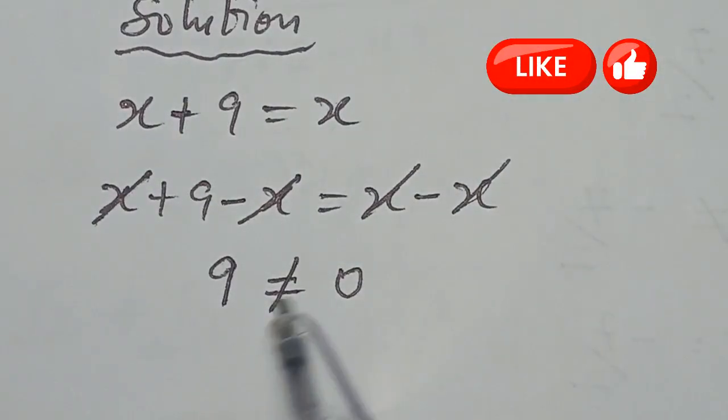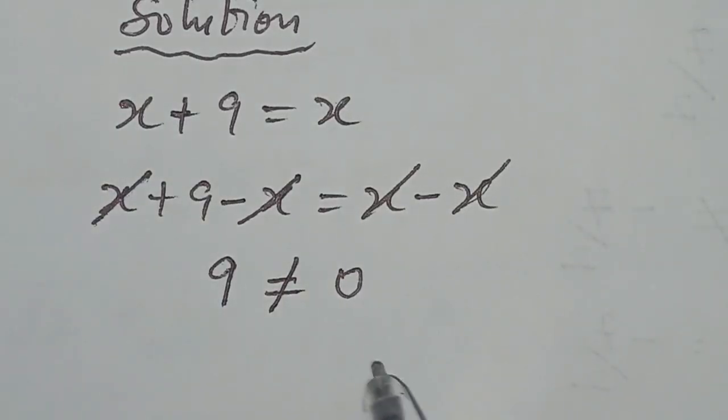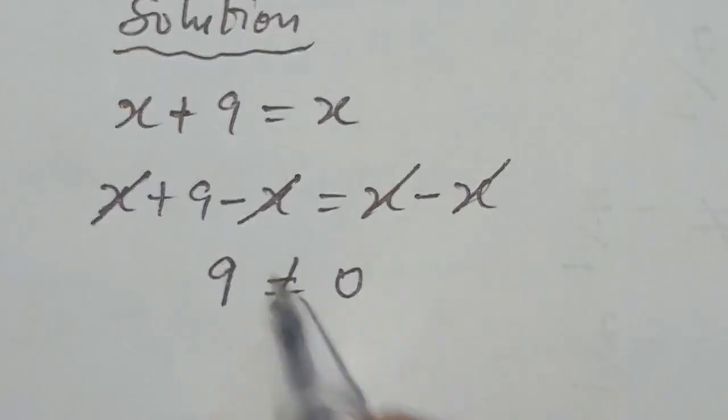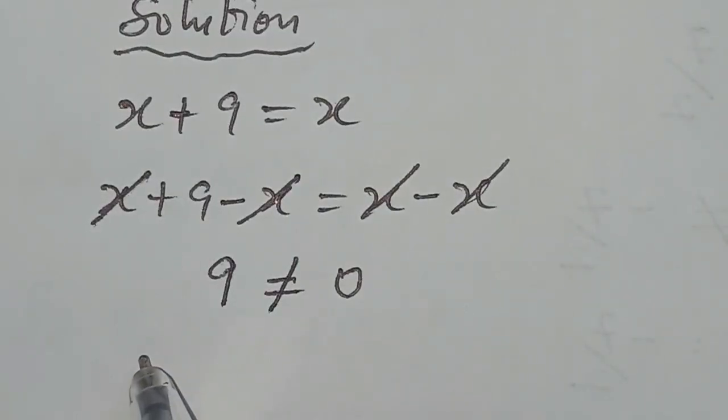This actually is not equal to 0, so it contradicts. Therefore, no solution exists solving for x in this manner. Now, let's try another method.